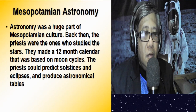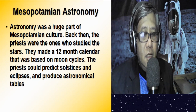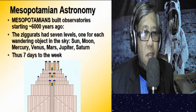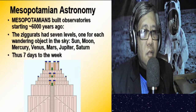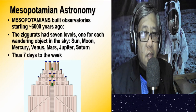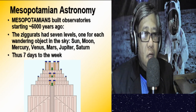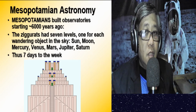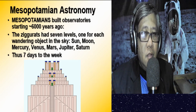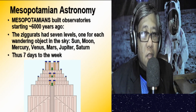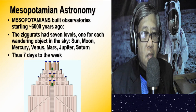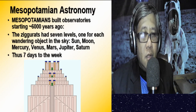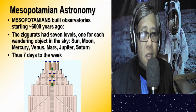The Mesopotamians also constructed observatories in the form of ziggurats, built about 6,000 years ago. A ziggurat resembles the pyramids of ancient Egypt and has seven levels, each dedicated to a particular wandering object in the sky: the first level to the sun, the second to the moon, then Mercury, Venus, Mars, Jupiter, and the last level to Saturn.